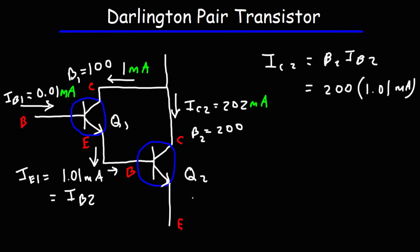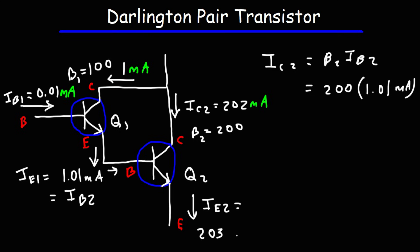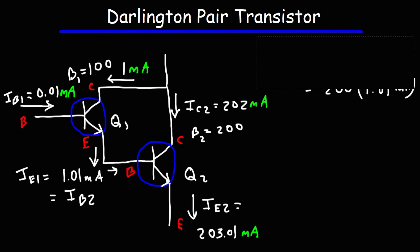To get the emitter current IE2, we need to add IB2 and IC2. So that's 202 plus 1.01, which gives us a current of 203.01 milliamps. So that's how we can calculate all of the currents when dealing with a Darlington pair transistor.